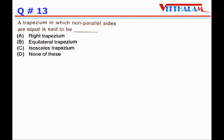A trapezium in which non-parallel sides are equal is called an isosceles trapezium. That is the definition of an isosceles trapezium.